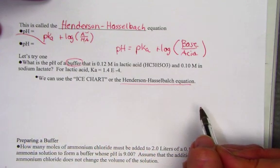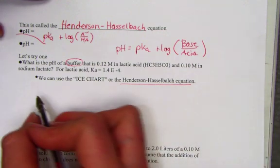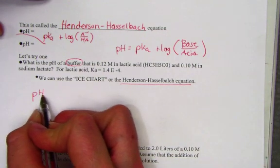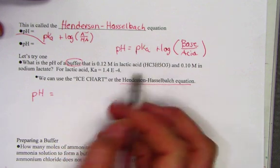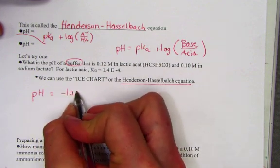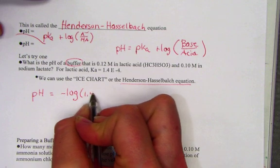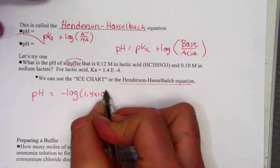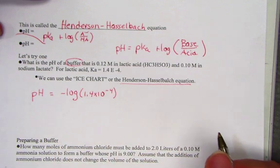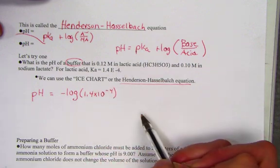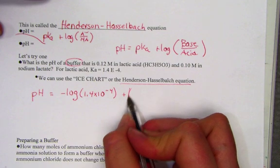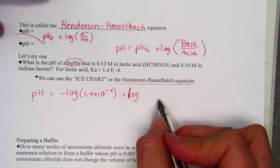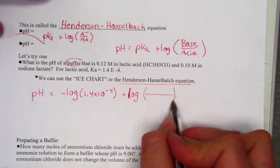The Henderson-Hasselbalch equation is so much easier. So, we simply plug in pH is equal to the pKa, which really is nothing more than the negative log of the Ka provided. 1.4 times 10 to the negative fourth. pKa is negative log of Ka plus the log of the ratio of base over acid.